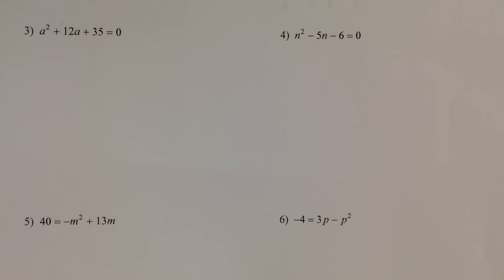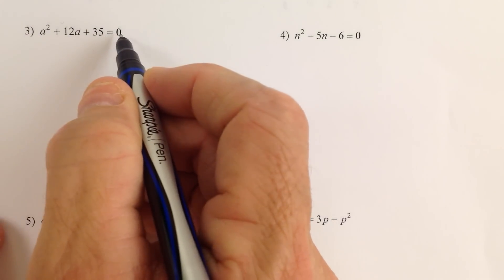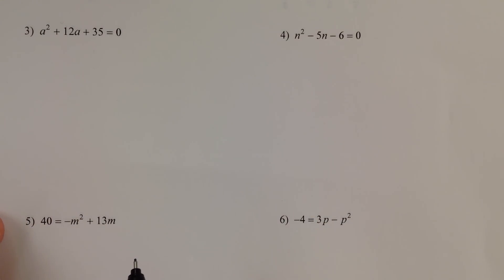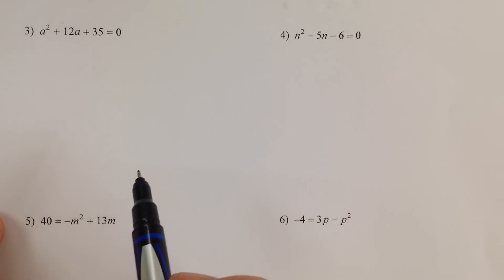So as we notice, the equation is already in the form quadratic equaling 0, so that's good. But unlike the previous example, the left side isn't yet factored.